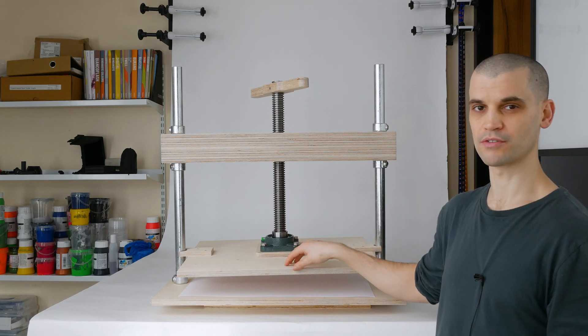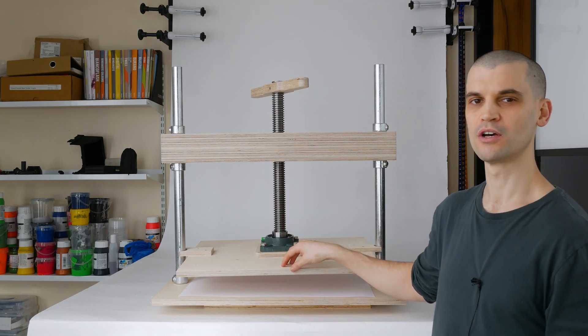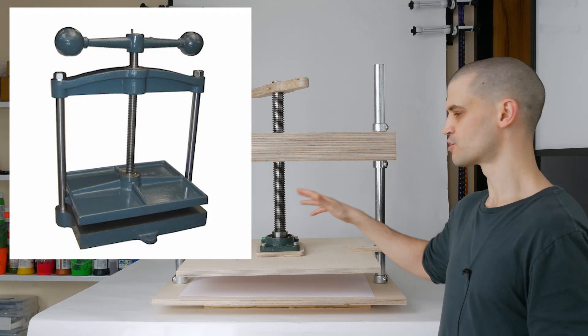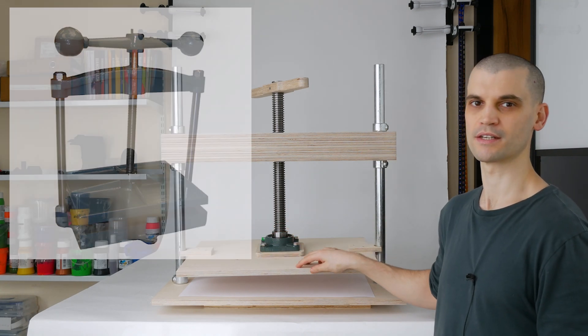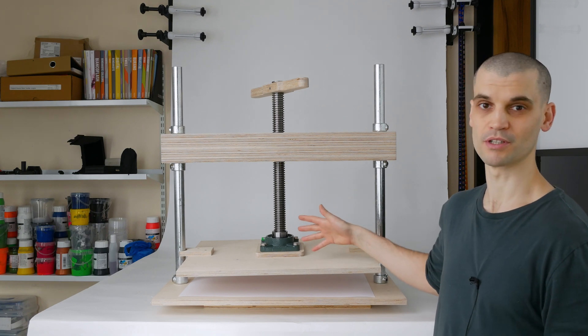If you look at most of the designs of kind of Victorian book presses or the ones that you know, cast iron, it's usually this kind of size is the maximum size that you see. So this is I wanted to build it as big as possible really.